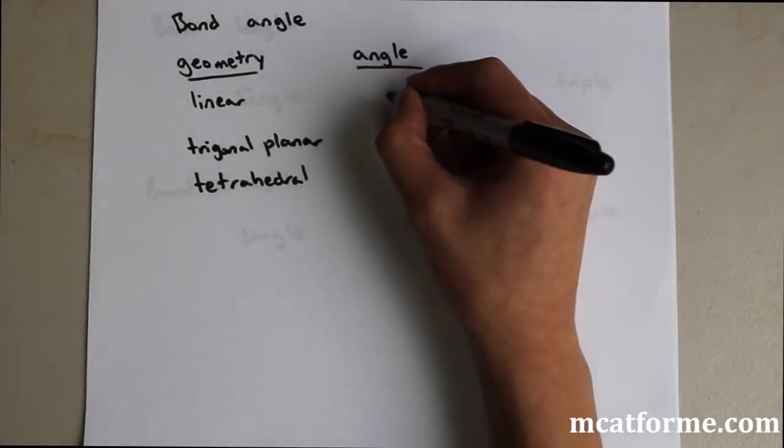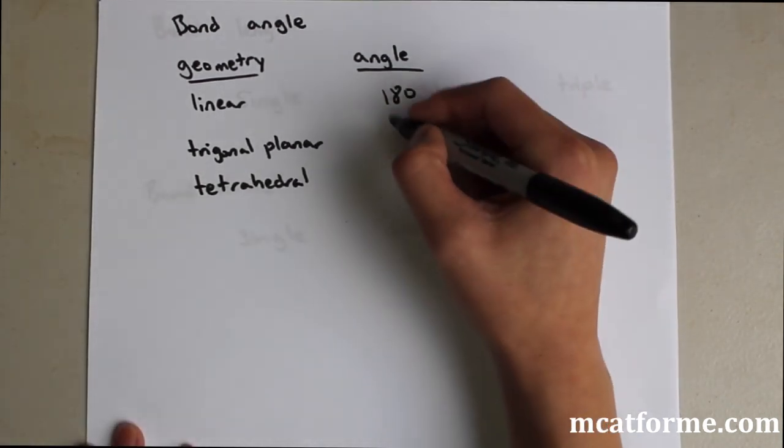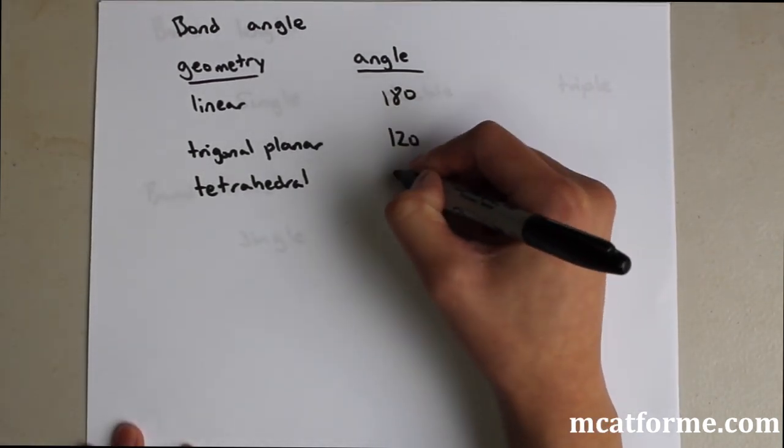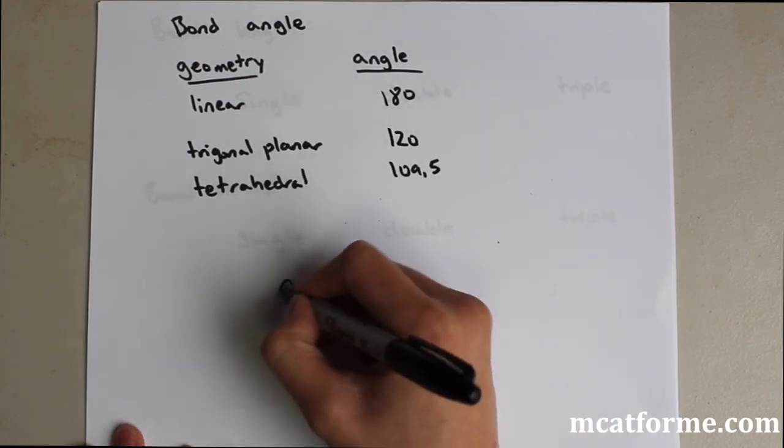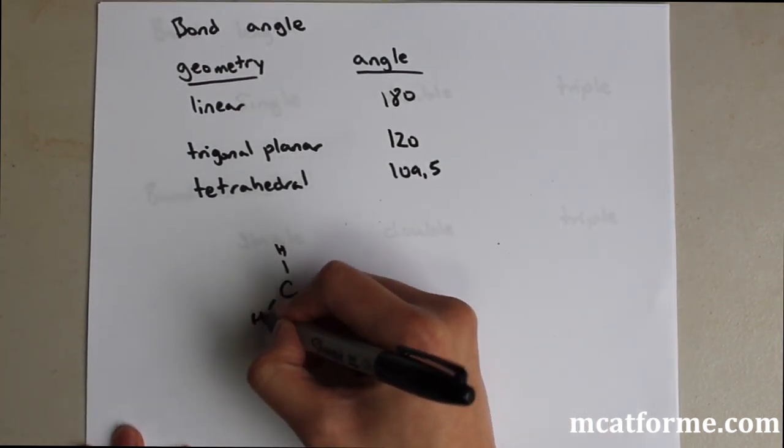So linear should be pretty obvious, it's going to be 180 degrees. Trigonal planar is 120, and tetrahedral is 109.5. So this tetrahedral molecule would look something like this.